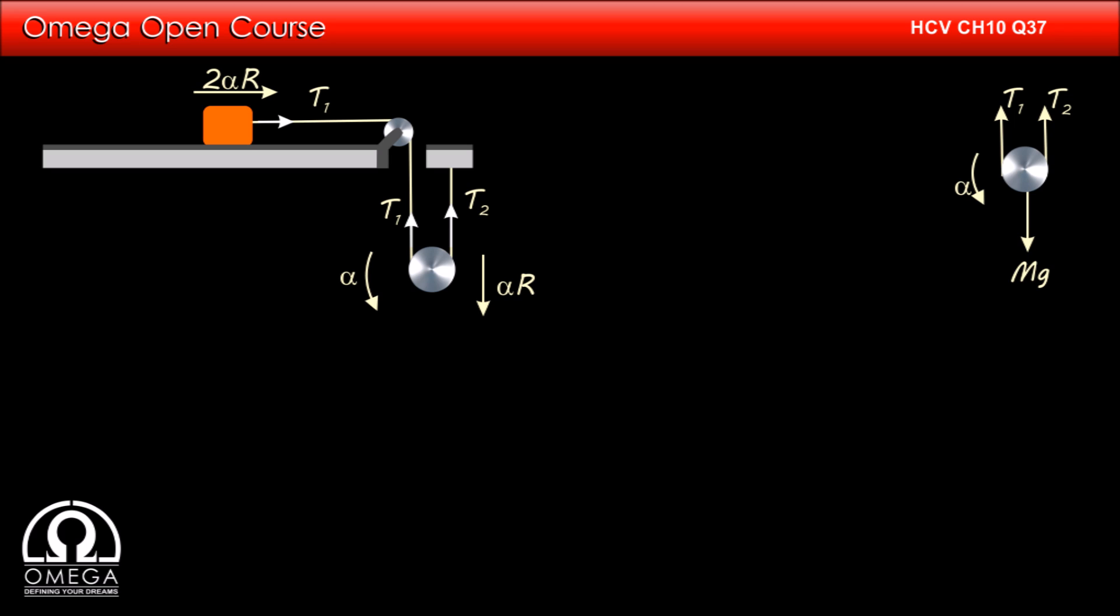It is rotating with angular acceleration alpha. Since pulley is not slipping on the string, we can say that it is rolling on the string and therefore the point of contact between the string on the right and the pulley can be considered as the axis of rotation.